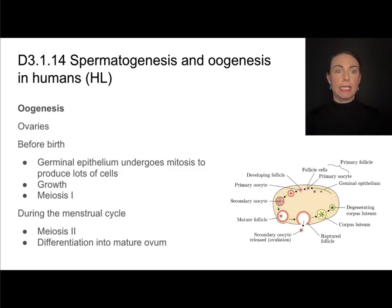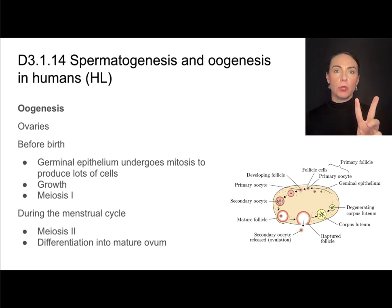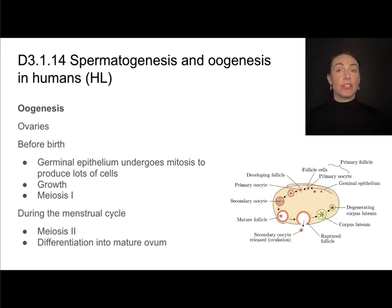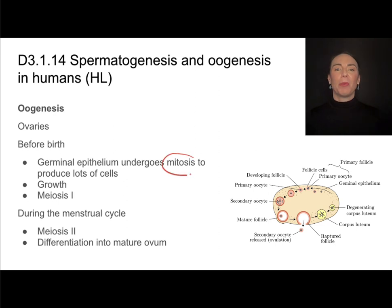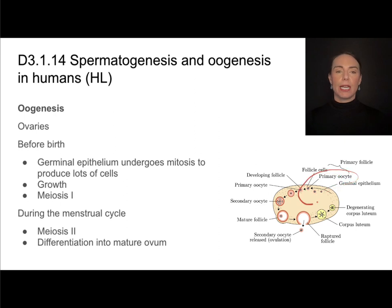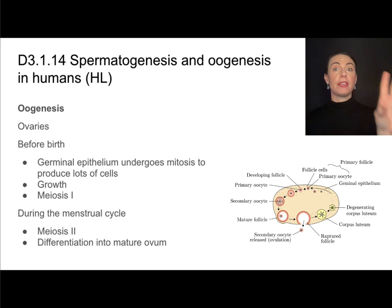Now we'll move on to oogenesis. This is going to occur in the ovaries, and unlike males where it's all happening from puberty onward, this is going to happen in two main stages — it's actually going to start before birth. So before a female is even born, she begins the process of oogenesis. Just like with males, the germinal epithelium around the periphery will undergo mitosis many times, those cells will grow, and then before birth they will undergo meiosis one to become primary oocytes. This germinal epithelium is arrested in meiosis one right before birth and won't finish meiosis.